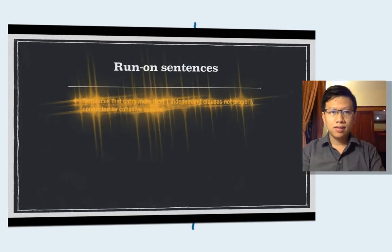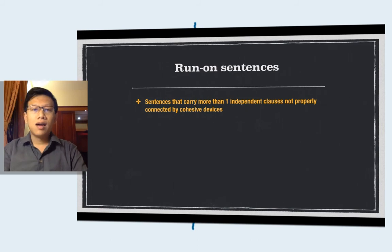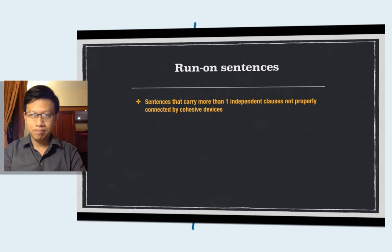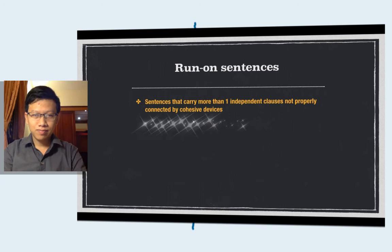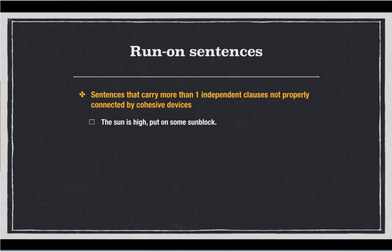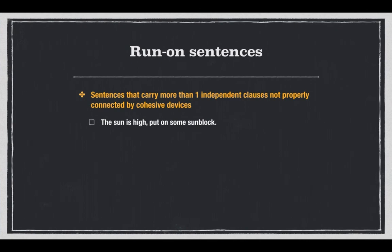So what is a run-on sentence? A run-on sentence, by its name, can be seen as a sentence that runs a little too long for its own purpose. But that's not really what we'll try to understand here. A run-on sentence is one that carries more than one independent clause at a time, and the clauses are not properly connected by cohesive devices. For example: 'The sun is high, put on some sunblock.' These are two independent clauses joined by a comma, which is not correct in terms of English structural rules.